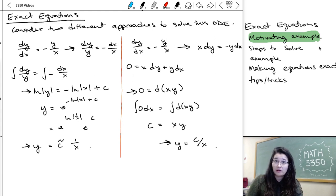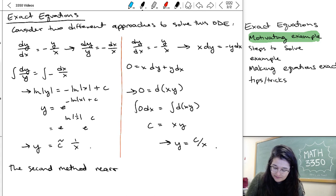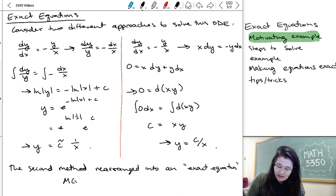And so both approaches work. You're familiar with the one on the left, but the one on the right was obtained by rearranging our ODE into what's called an exact equation, where we have some m that can depend on x and y times dx plus some n that can depend on x and y times dy. So that equals 0.